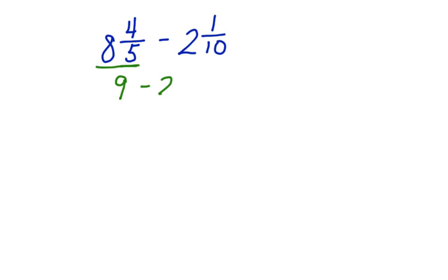9 minus 2 and 1 tenths. 1 tenths doesn't simplify. So let's just leave that alone for right now. Let's work with the whole numbers. 9 minus 2 is 7. And then if we include the 1 tenths, we can say 7 and 1 tenths is a reasonable estimate.